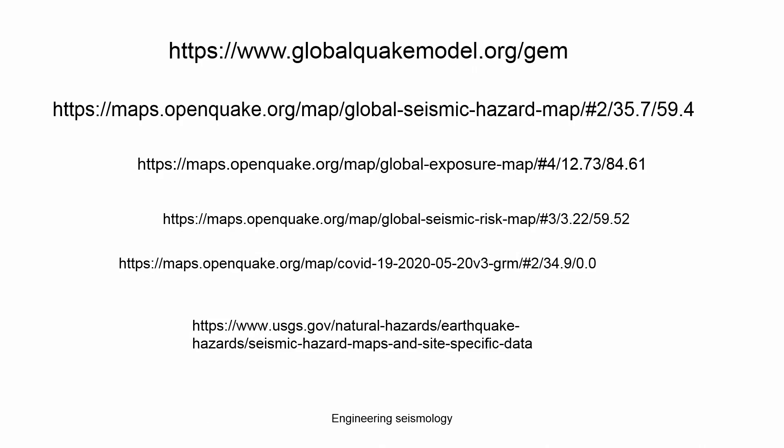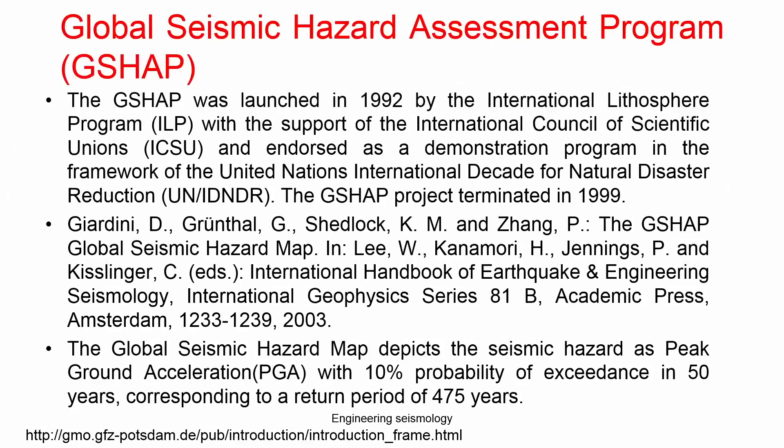The Global Seismic Hazard Assessment Program (GSHAP) is not a new one — it was actually started in 1991 by the International Lithosphere Program. That was the first global-level attempt to prepare a seismic hazard map of the entire globe. Earlier, scientists concentrated on preparing hazard maps for their own region, not for the entire globe. A group of scientists came together and started the International Council for Scientific Union, which endorsed the framework for the United Nations International Decade for Natural Disaster Reduction. They then started the GSHAP project.